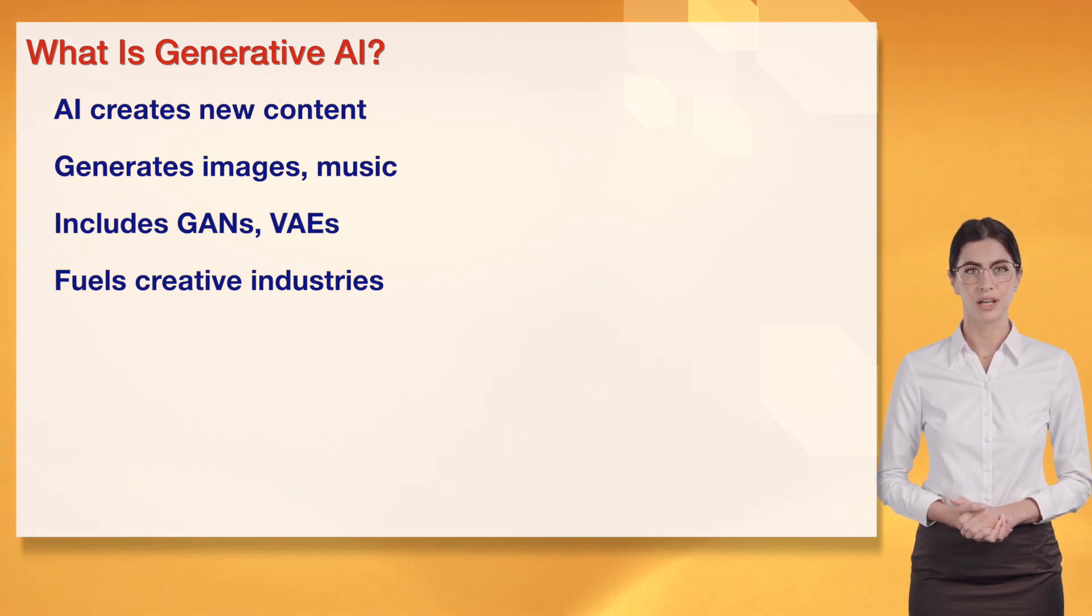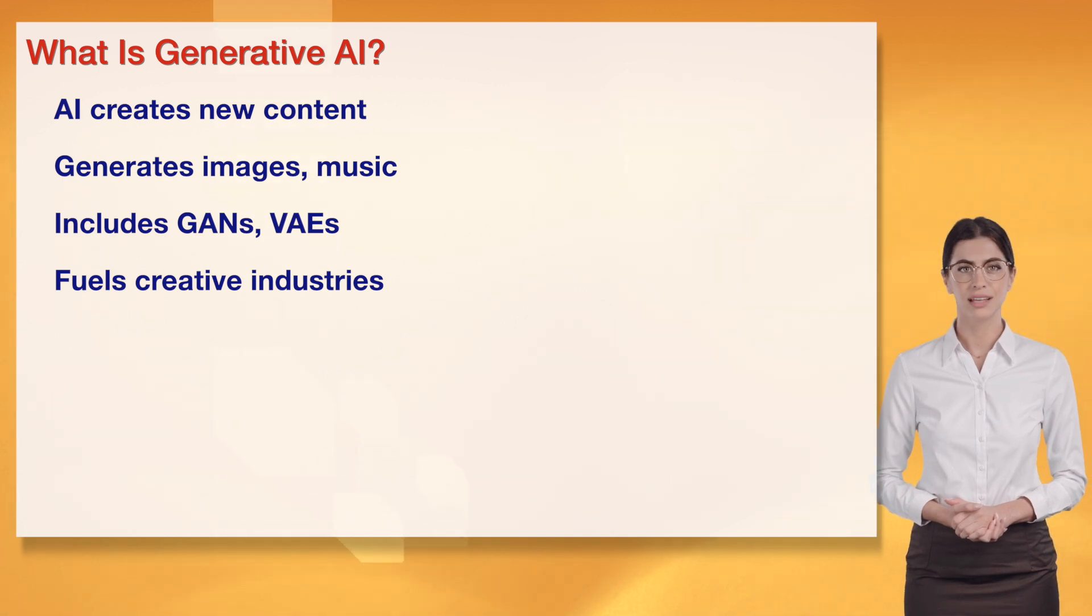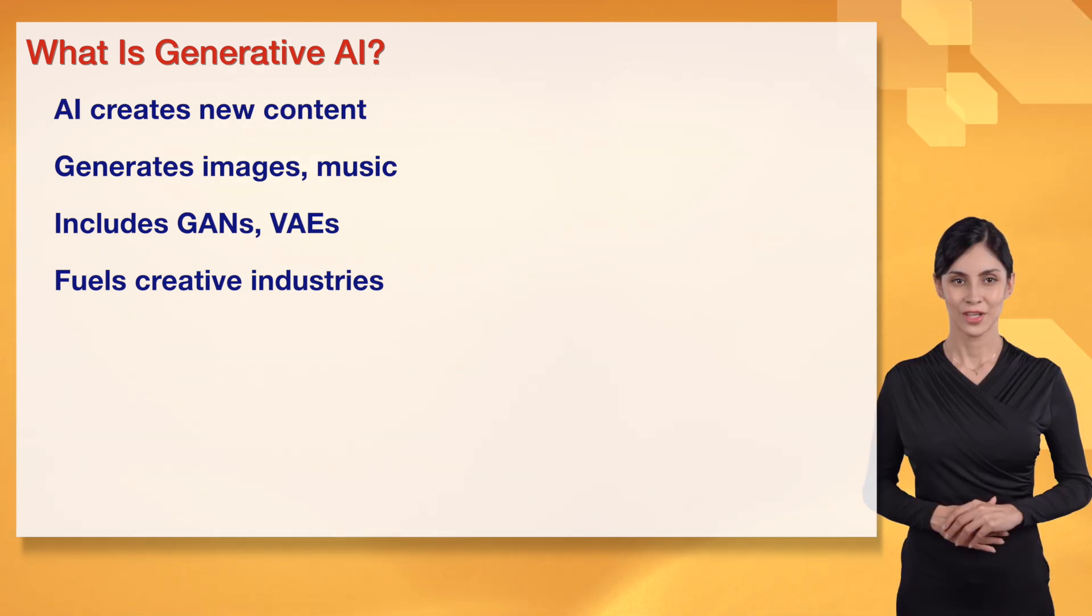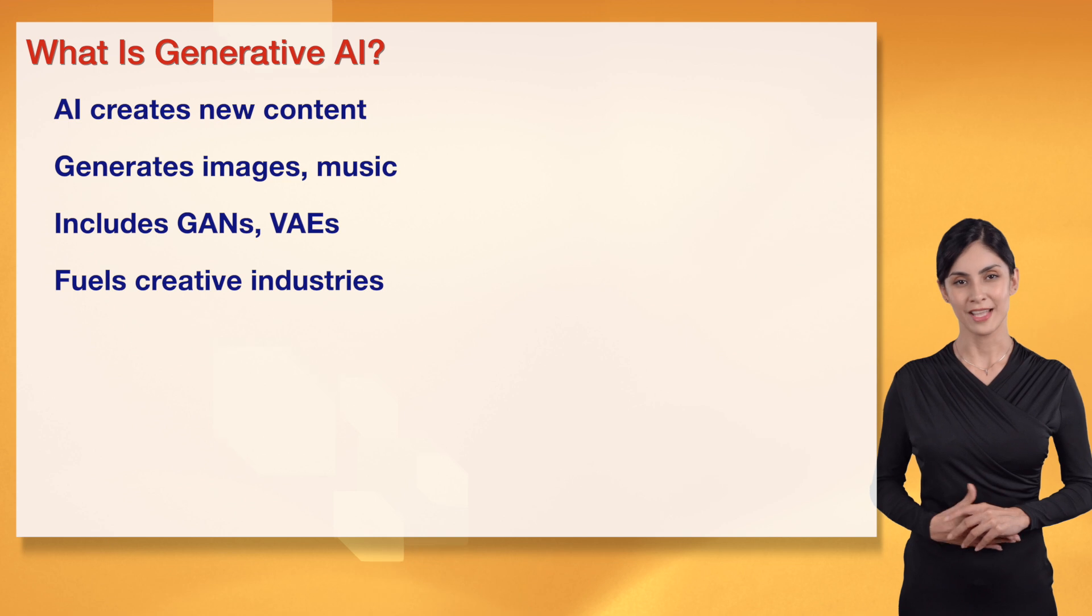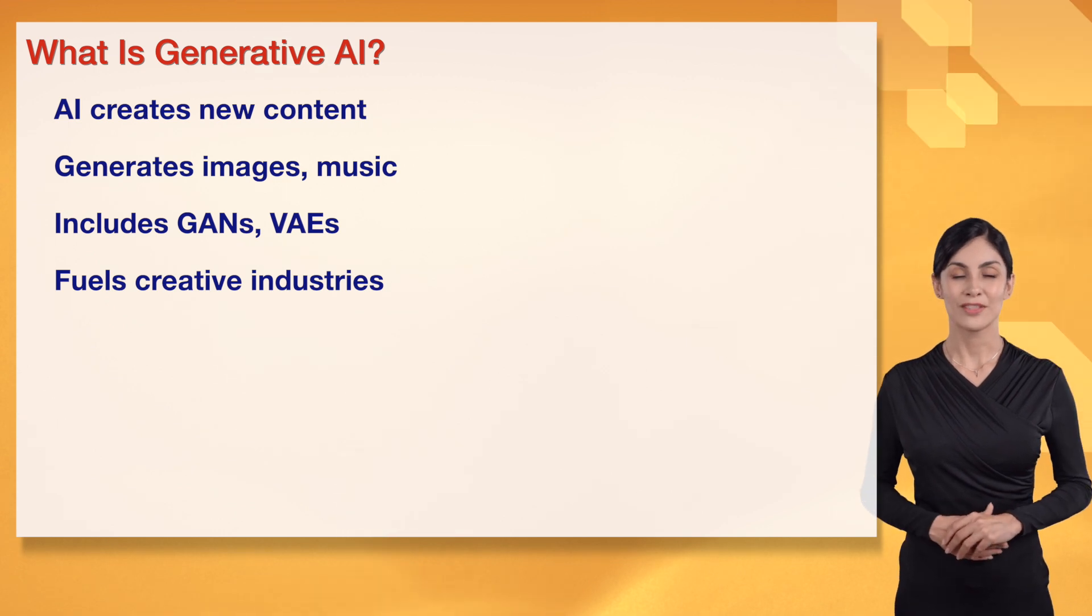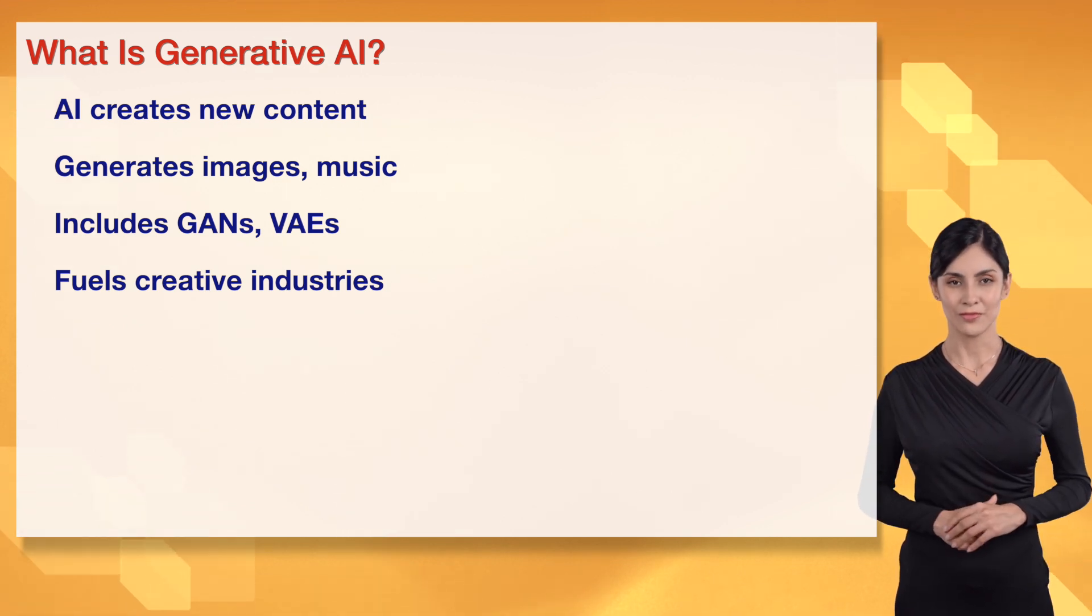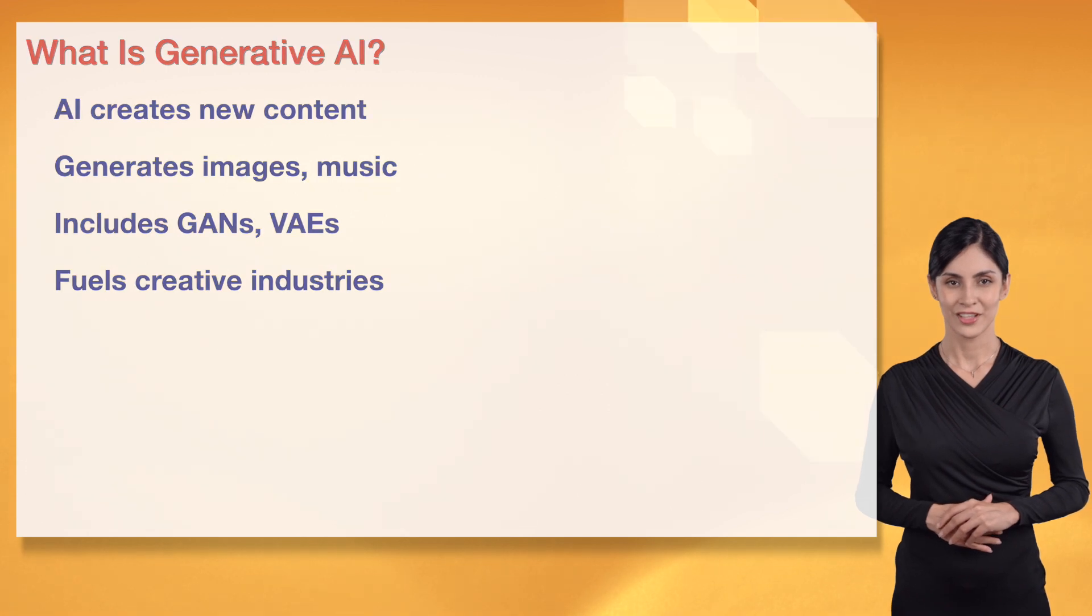Anastasia, how do GANs make such realistic images? Great question, Olivia. GANs use a generator and discriminator to craft lifelike images like digital artists. It's like a creative duel. I'm excited to dive deeper with you. This is art's future.